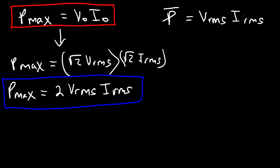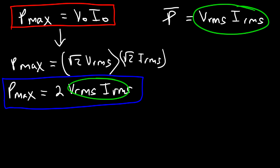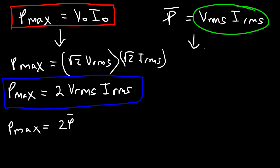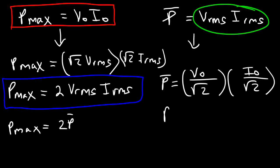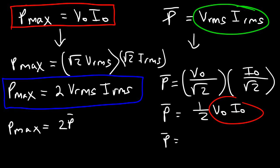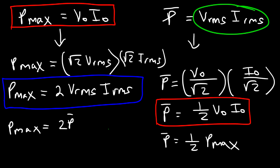The maximum power is twice the value of the average power. Conversely, the average power can be expressed in terms of peak values: V_RMS equals peak voltage divided by the square root of 2, and RMS current equals peak current divided by the square root of 2. Together these give a factor of 2 in the denominator, so the average power equals one half of the peak voltage times the peak current — which is one half of the maximum power. Make sure you know these formulas.